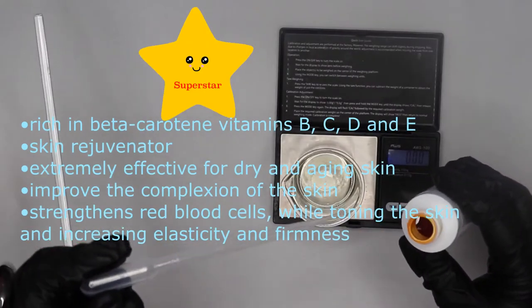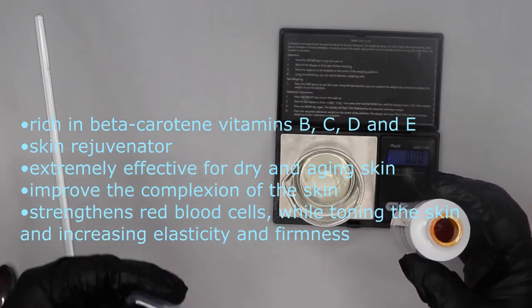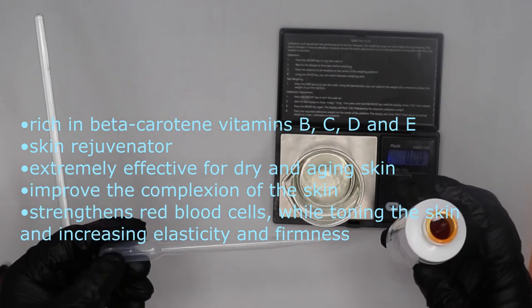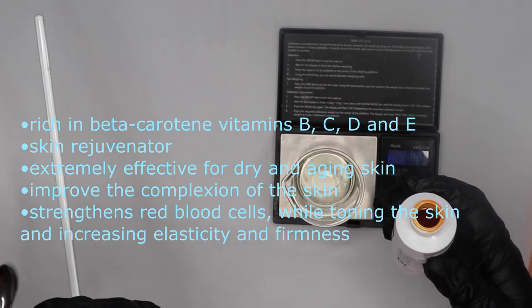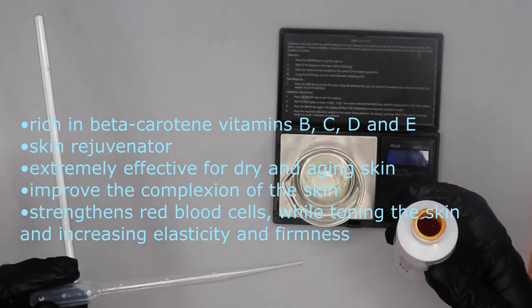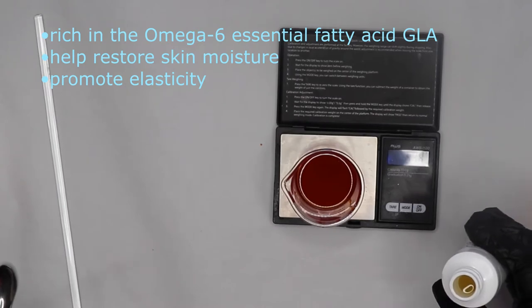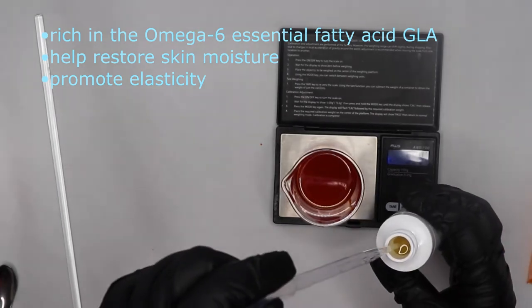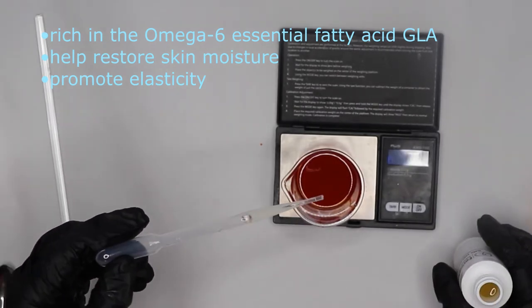4.8 grams of carrot seed resin. This is going to give us that beautiful color and it has very rejuvenating properties due to all these vitamins. It's high in vitamin B, C, D, and E. 4.8 grams of borage oil. This comes from a plant and it provides elasticity to the skin.